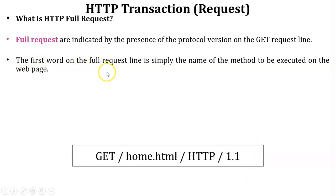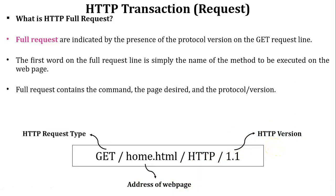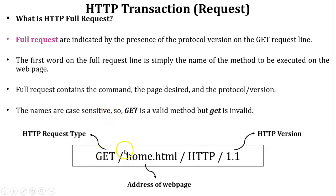The first word on the full request line is simply the name of the method — here it is GET — to be executed on the web page. The full request also contains the page desired and the protocol version, for example home.html is the address of the web page and HTTP/1.1 is the version of the HTTP protocol. The difference between a simple request and a full request is that the HTTP version is not available in the simple request but is available in the full request. The HTTP request type GET is case-sensitive and must be written only in capital letters.